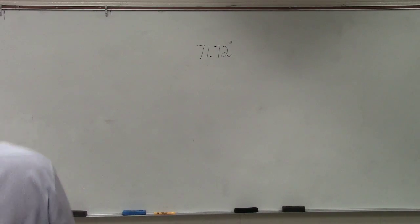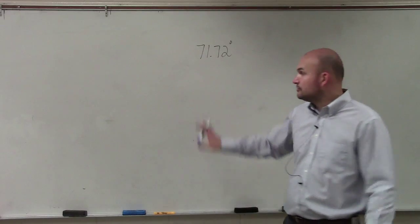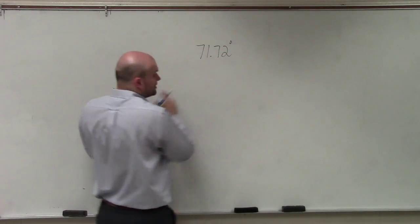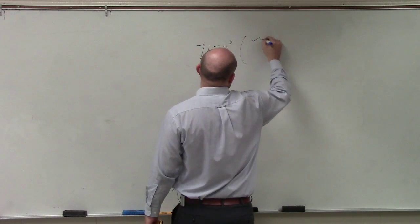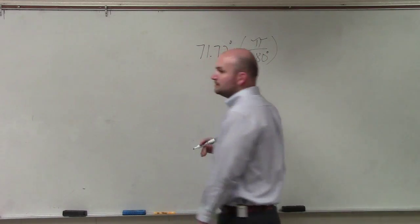OK, well, if you're converting to radians, all we simply need to do is remember our conversion ratio. When going from degrees to radians, you're going to multiply by π over 180.